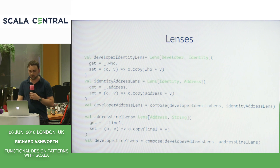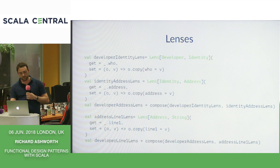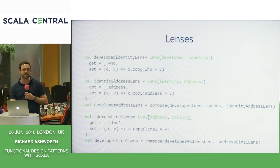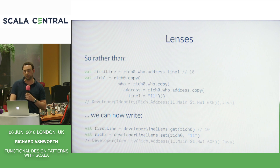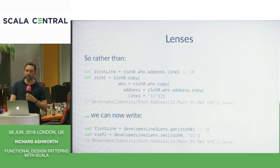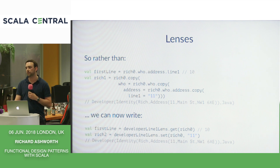Going back to our development team example — the first lens goes from Developer to Identity, Identity to Address, which we compose into a single lens. We can add a further lens and compose again, so performing lens composition twice gives us a developer-line-one lens. We can edit line one of a developer's address in one go. In practice, using this code we can write it much more tersely and cleanly than before. This is really one of the key features of patterns in functional programming — abstracting the mechanics of something, here manipulating state, into something separate like a lens, so we can hide away all that complexity. That's something we'll see time and time again in functional Scala.